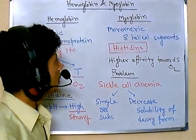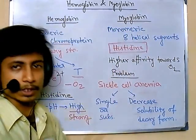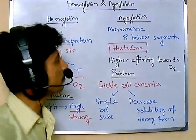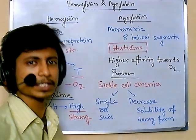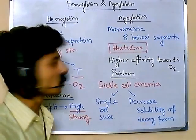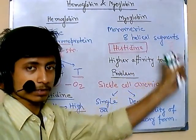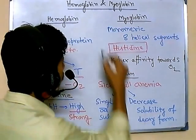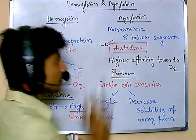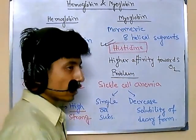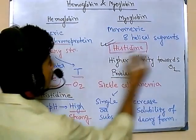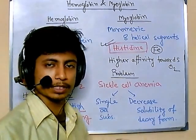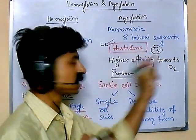Now let's talk about myoglobin. Myoglobin is another very important globular protein in our body. Unlike hemoglobin, myoglobin is monomeric — it has only one polypeptide chain, which is longer than the individual alpha and beta subunits of hemoglobin. It has eight helical segments. Like hemoglobin, myoglobin also contains histidine, and it also contains iron, which plays a very important function in maintaining structural integrity.